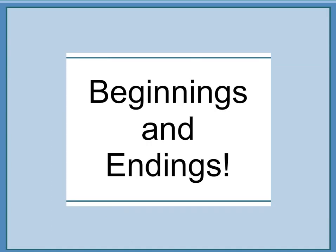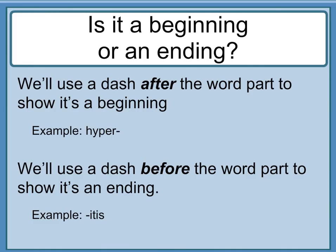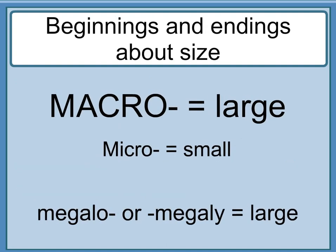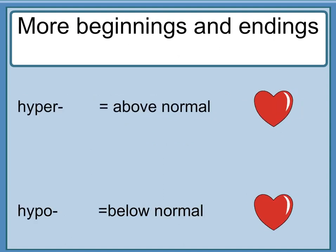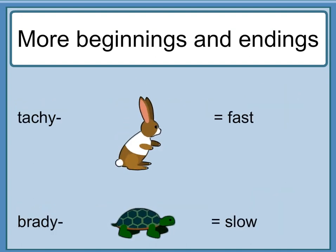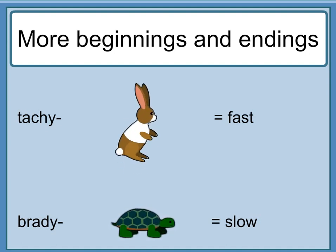Beginnings and endings. We'll use a dash after the word part to show it's a beginning, for example 'hyper-'. We'll use a dash before the word part to show it's an ending, for example '-itis'. Beginnings and endings about size: 'macro-' equals large; 'micro-' equals small; 'megalo-' or '-megaly' equals large. About normal range: 'hyper-' equals above normal; 'hypo-' equals below normal. About speed: 'tachy-' equals fast; 'brady-' equals slow.